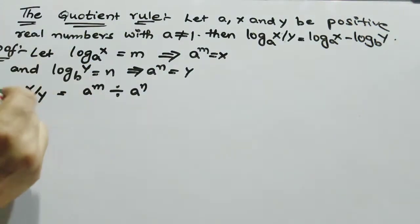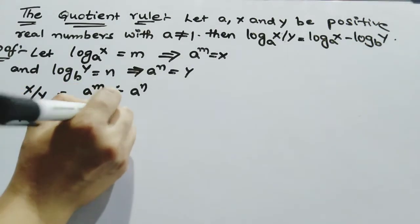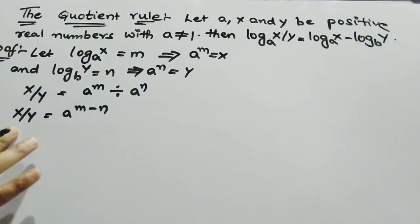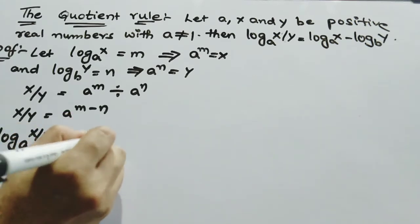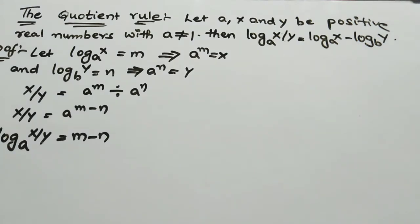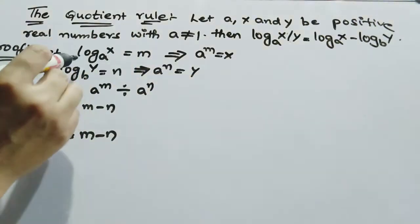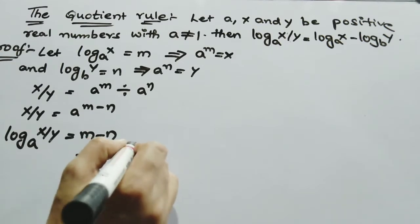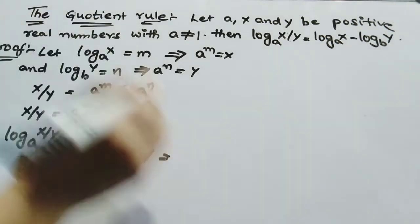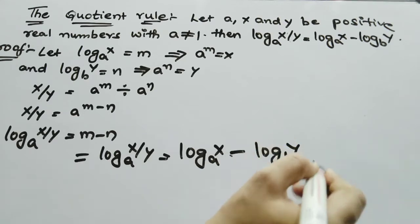Using the exponential formula: a^m divided by a^n gives x/y equals a to the power of m minus n. Converting to logarithm: log(x/y) base a equals m minus n. What is m? m is log x base a. What is n? n is log y base a. So log(x/y) base a equals log x base a minus log y base a. Hence we proved.